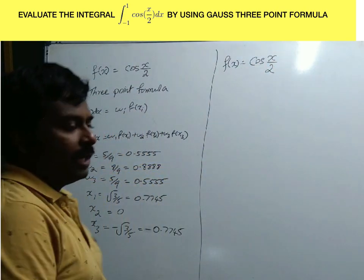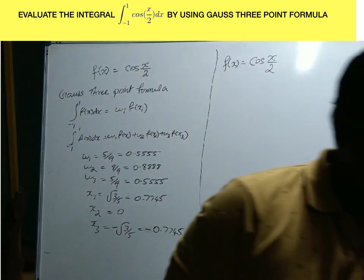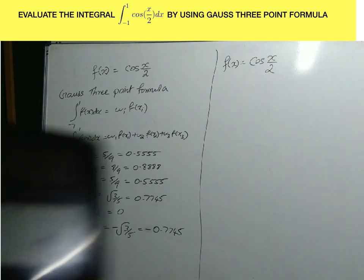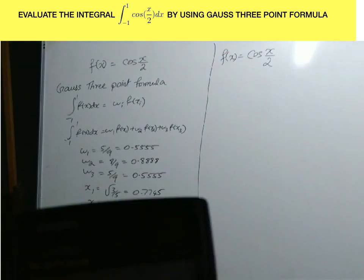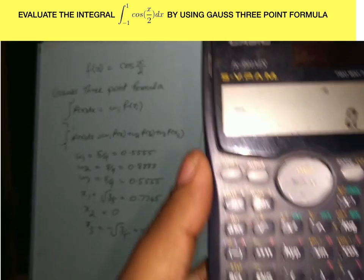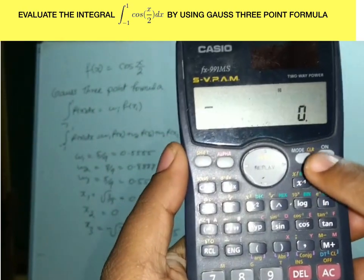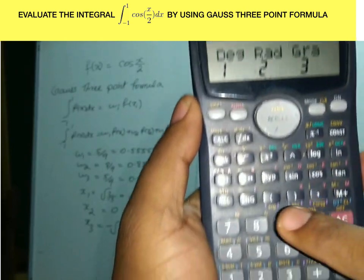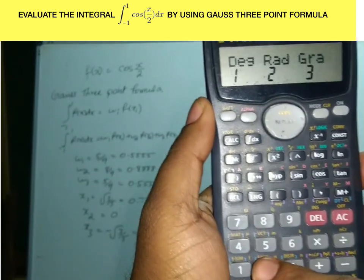f(x) equals cos(x/2). First, we need to change to radian mode. Press mode 1, 2, 3, 4, and press 2 for radian mode.